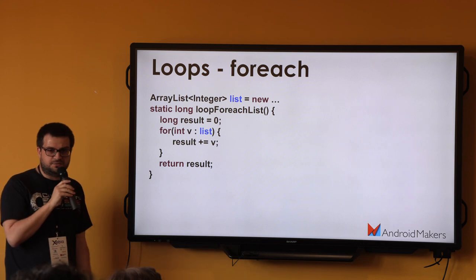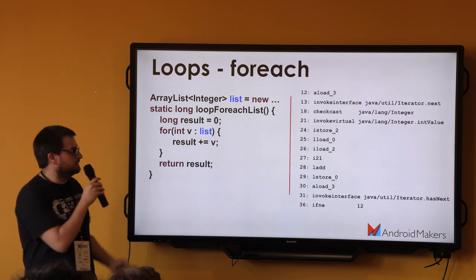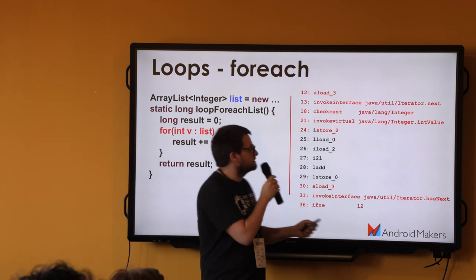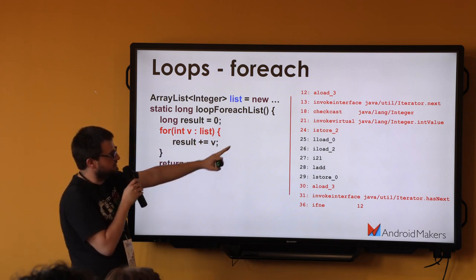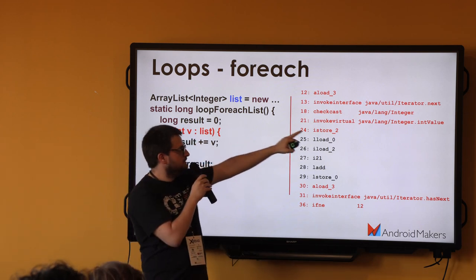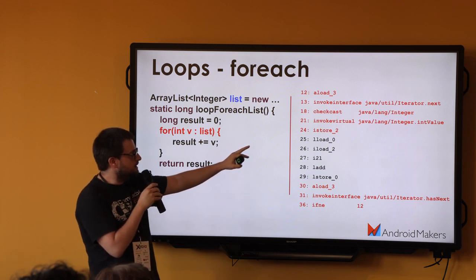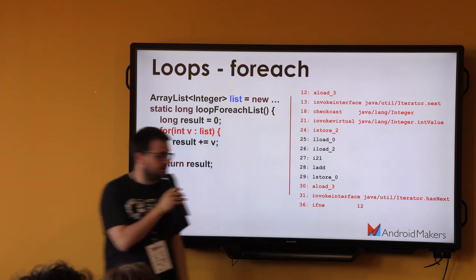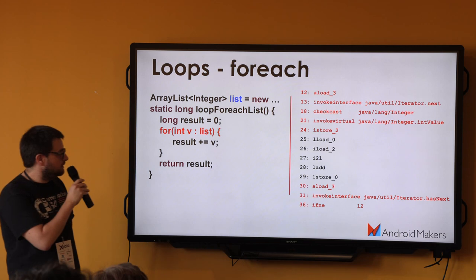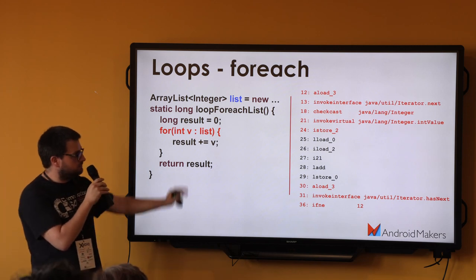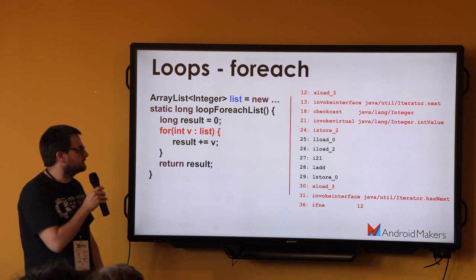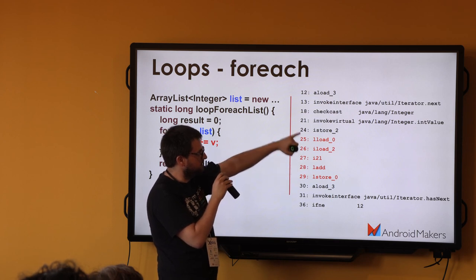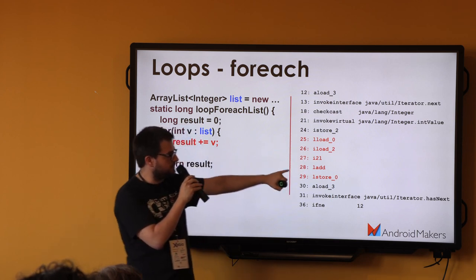Let's do it with for-each. You know what happens — it uses an iterator. This for loop is basically getting iterator.next, checking the cast if it's an Integer, getting the intValue, storing it, and for the loop condition it's calling hasNext on the iterator. The result computation is the same operations — it's storing already the value so it's just loading them, adding together, and storing the result.